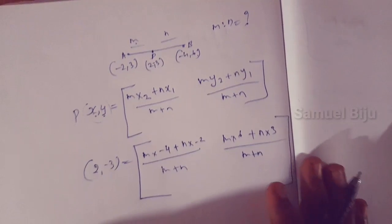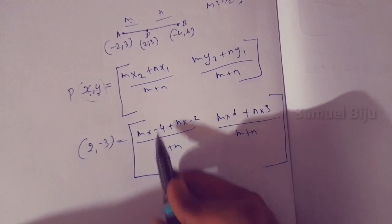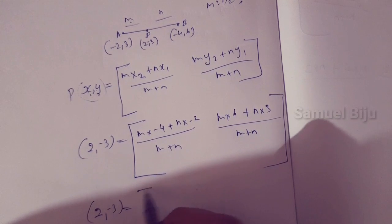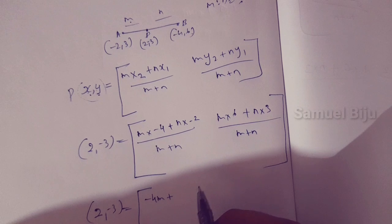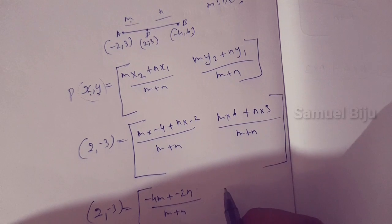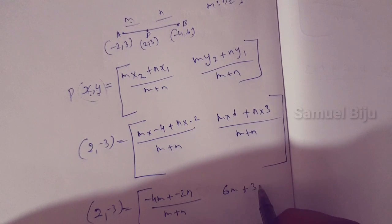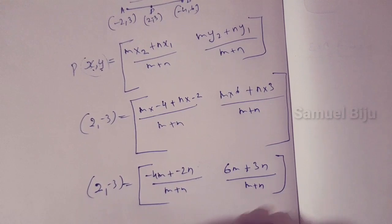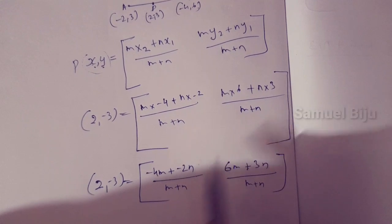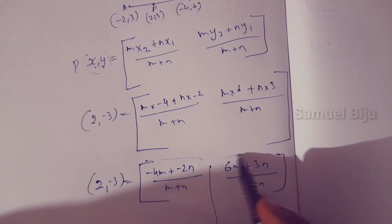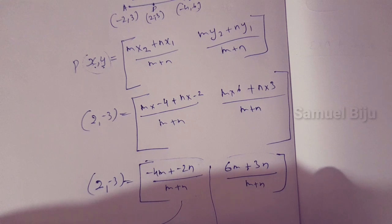Solving the x-portion: 2 times (m plus n) equals minus 4m plus minus 2n, which gives minus 4m minus 2n divided by m plus n. For y: 6m plus 3n divided by m plus n. This is x and this is y — they are the same structure.